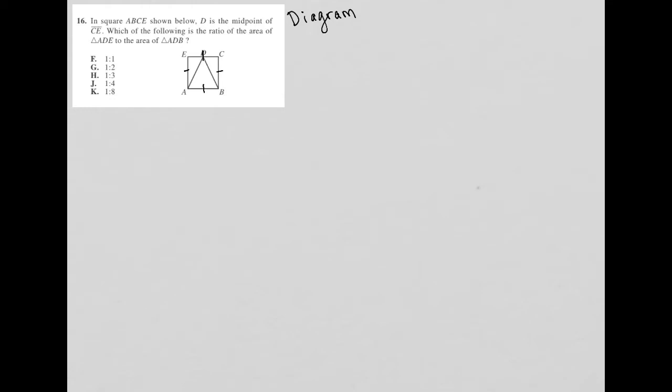D is the midpoint of CE. Okay, so that means that these two sides here, E to D and D to C, are equal to each other. Which of the following is the ratio of the area of triangle ADE to area triangle ADB? There's my question.